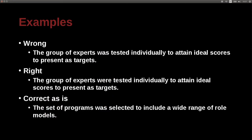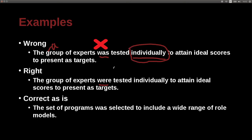'The group of experts was to arrive at one solution' — this is correct, because 'was' is used with a single group. 'The set of programs was selected' — why 'was'? Because it's the set, just like the group: it's a single set, so it's singular and 'was' is correct.